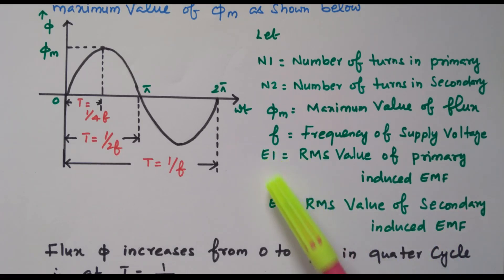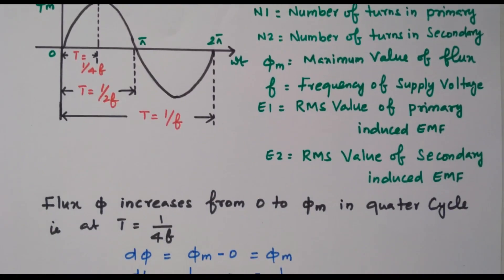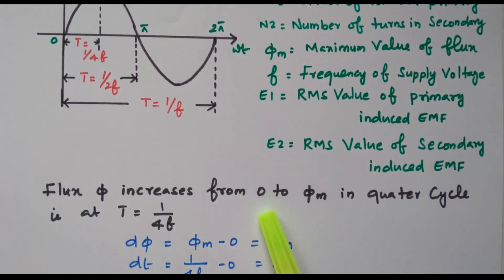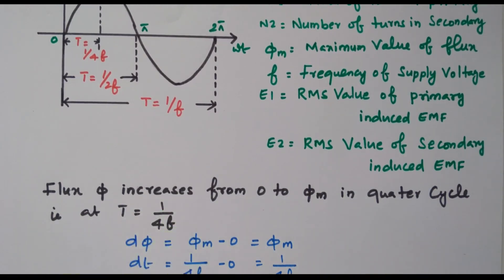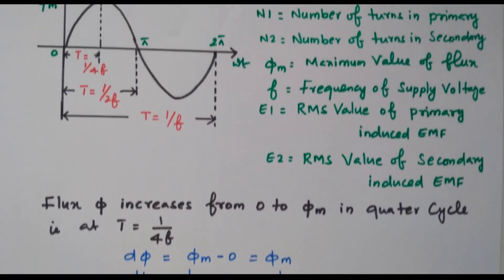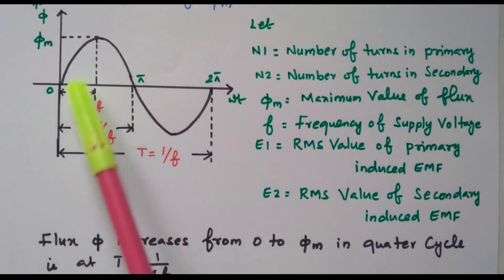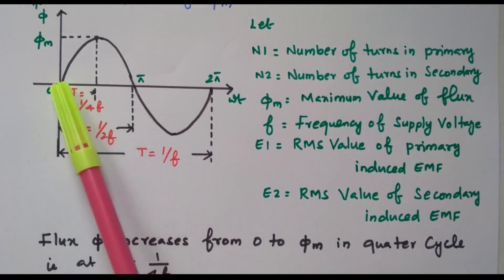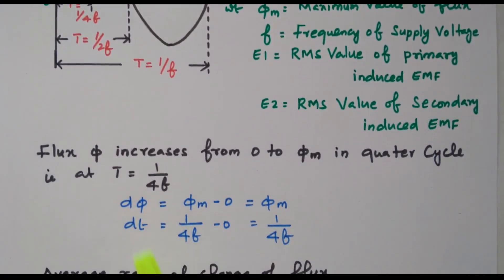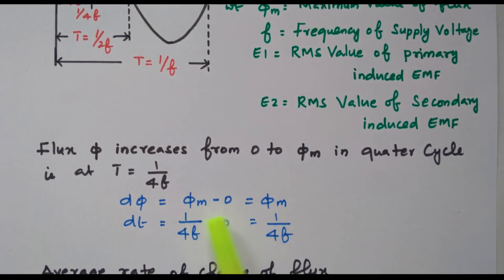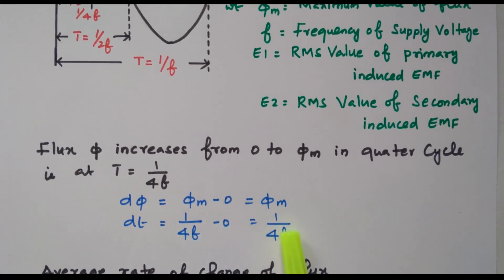Now we need to find the expression for E1 and E2. Referring the diagram, the flux increases from 0 to φM in a quarter cycle, that is in a time of 1/(4F). The change in flux is φM minus 0, which is φM. The time taken is 1/(4F) minus 0, which is 1/(4F). So the rate of change of flux is φM divided by 1/(4F).